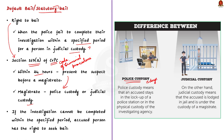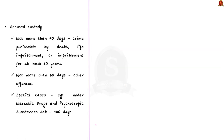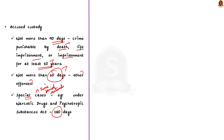If more time is needed to complete the investigation, the accused can be held in judicial custody. If the investigation cannot be completed within the specified period, the accused person has the right to seek bail — this is what we call default bail. The accused cannot be held for more than 90 days if the investigating authority is looking into crimes punishable by death, life imprisonment, or imprisonment for at least 10 years. For other offences, the maximum period of detention is 60 days. Under the Narcotic Drugs and Psychotropic Substances Act, the investigation period can be up to 180 days.